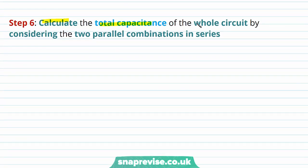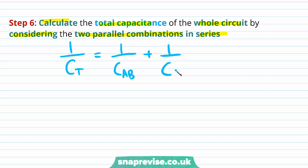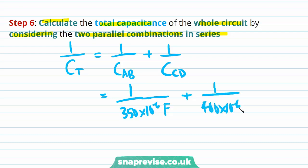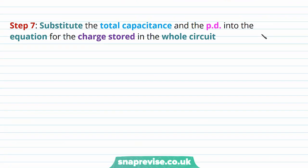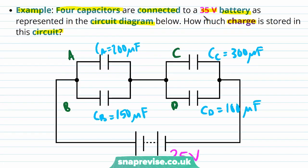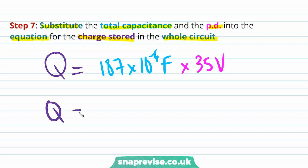Step 6: calculate the total capacitance of the whole circuit by considering the two parallel combinations in series. So 1/CT = 1/CAB + 1/CCD = 1/(350 × 10⁻⁶) + 1/(400 × 10⁻⁶), and CT = 187 × 10⁻⁶ F. Step 7: substitute the total capacitance and potential difference into Q = CV. The charge stored Q = 187 × 10⁻⁶ F × 35 V = 6.53 × 10⁻³ coulombs to three significant figures.